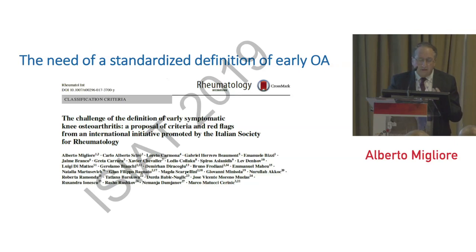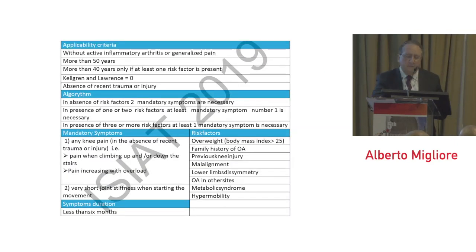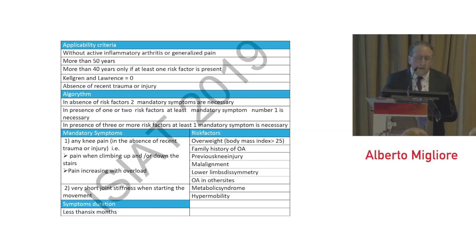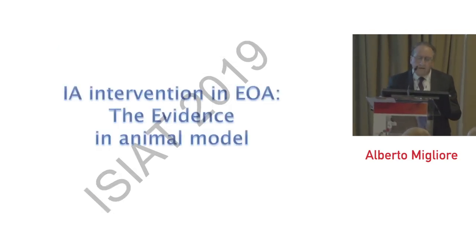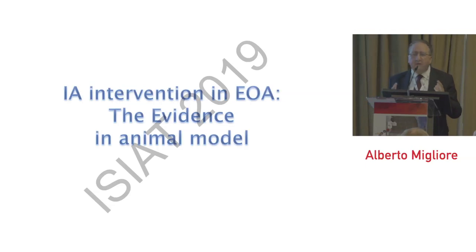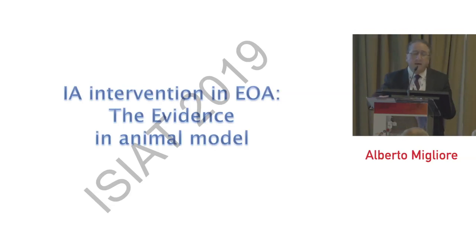We published this definition and it is now under validation. The applicability criteria include absent or recent trauma, Kellgren-Lawrence grade 0 or 1, and age, combined with presence or absence of risk factors. There is a mandatory symptom: any knee pain in the absence of recent trauma injury. We can generally speak about early arthritis considering the early radiographic stage of OA and initial symptoms.